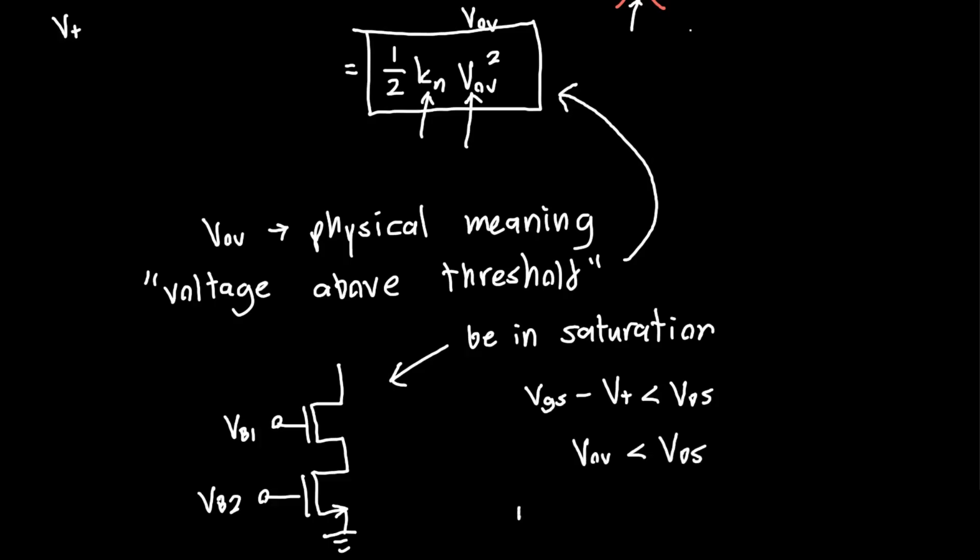Or my personal favorite, the minimum of the overdrive voltage and VDS to be the overdrive voltage. So if we assume that this is the case, then we get one overdrive voltage drop across here, one overdrive voltage drop across here, and we know that the output can be at minimum twice the overdrive voltage.